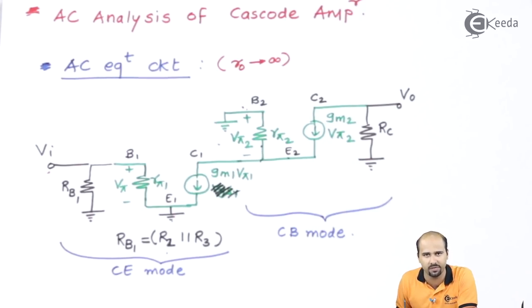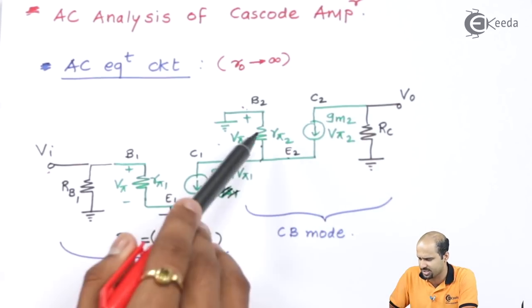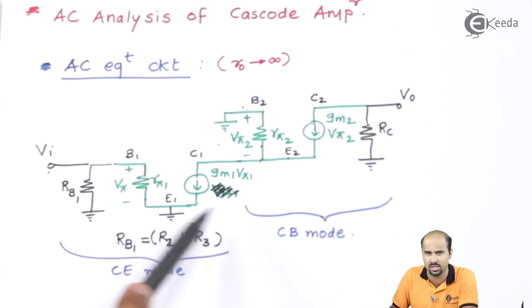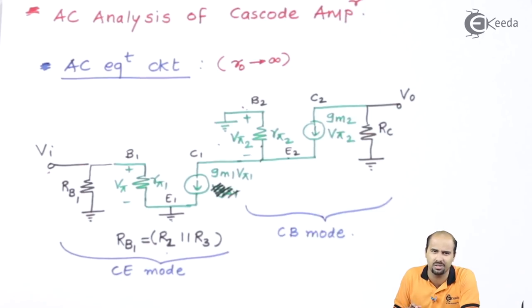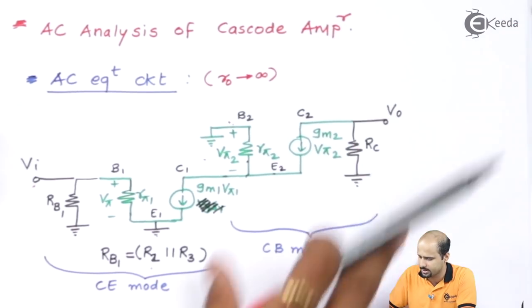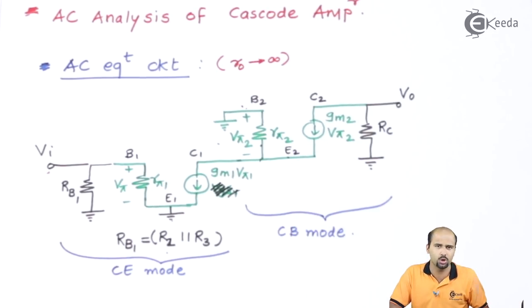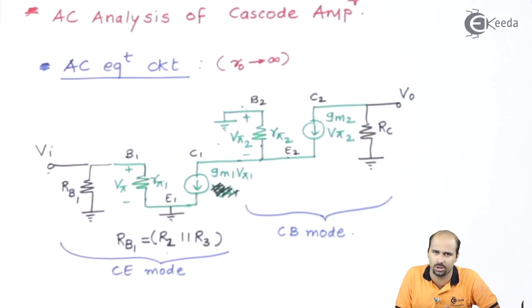We have a complex AC equivalent model. In some books they may write gm2·vπ2 in a horizontal configuration and rπ2 connected differently, which can cause confusion. We will use the same configuration: gm1·vπ1 and rπ1 for stage 1, and rπ2 and gm2·vπ2 for stage 2. Then applying the five-finger method, we will quickly get the voltage gain.